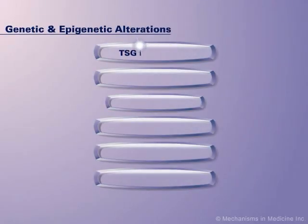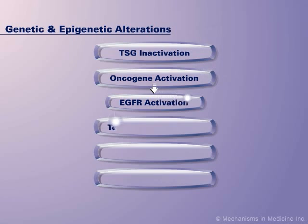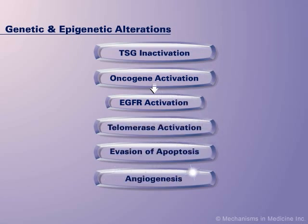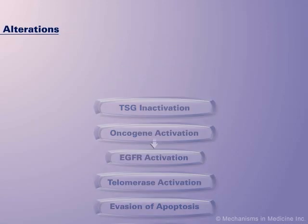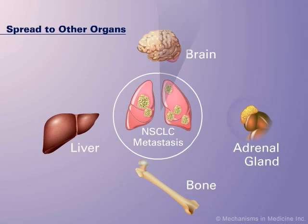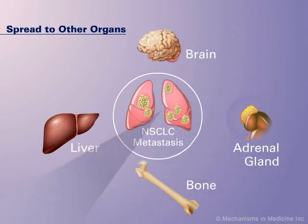The accumulation of these and other genetic and epigenetic alterations may randomly occur throughout the genome and eventually lead to NSCLC. As NSCLC advances, the tumor may spread to other areas of the lung and to other organs.